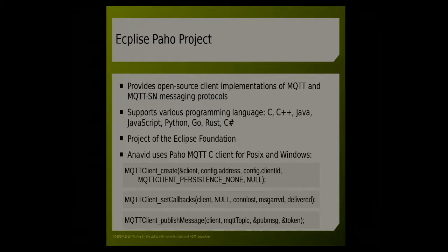The first library I'm using is the Eclipse PAHO project. It provides MQTT client libraries written in the most popular languages: C, C++, Java, JavaScript, Python, Go, Rust, and C#. It's another project of the Eclipse Foundation, just like the Mosquitto broker. In order to use it, first I have to create an MQTT connection. After that, I set a callback, because MQTT communication is asynchronous — an event can occur at any time and the MQTT broker should notify my client that an event has appeared so my client can take the necessary actions. If my client wants to publish an MQTT message, this is the function from the PAHO MQTT C implementation. I'm doing this for sensors — if there is a change in temperature, I publish the message.